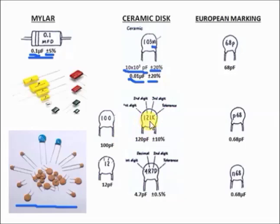For the second example, '121K': copy the first two numbers — that is 12 — then the '1' means you add one zero, giving 120 picofarad. The 'K' is the tolerance, equivalent to plus or minus 10%.